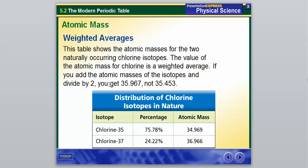Because this table shows the atomic masses for the two naturally occurring isotopes, and the value of atomic mass for chlorine is a weighted average. So that's an important thing. It's a weighted average. And because if you add the atomic masses of the isotopes and you divide by two, you're going to get 35.967, not 35.453. So what a weighted average is, is that since chlorine-35 occurs more often, so we can see here that there's more chlorine-35 than chlorine-37, that means we have to assign a greater value to this chlorine-35. It gets more attention than the chlorine-37 when we're making our calculations.